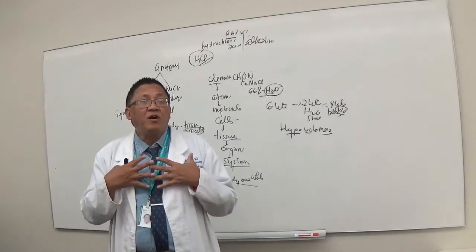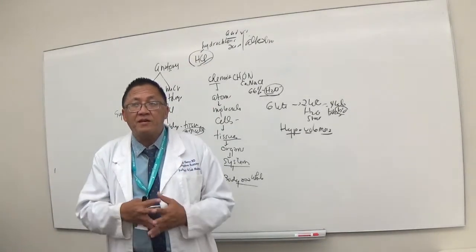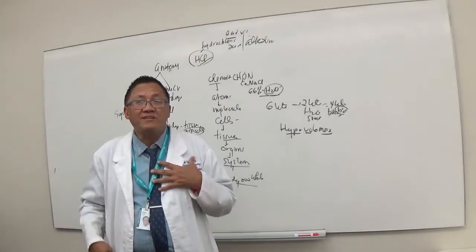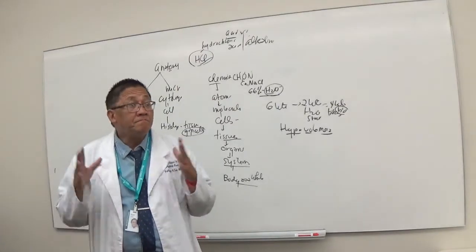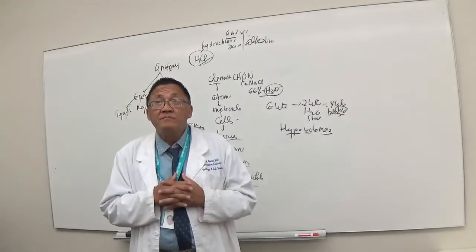Ventral cavity, you have thoracic and abdominopelvic cavity. What is found in the thoracic cavity? Lung. The heart.